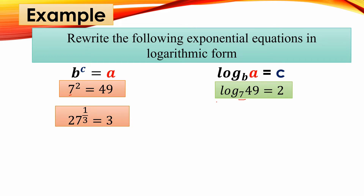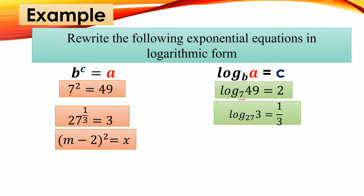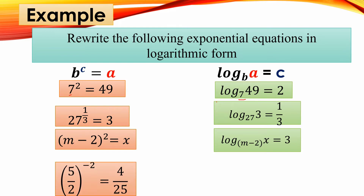Another example: (m minus 2) raised to 2 equals x. Transformed, this becomes: log base (m minus 2) of x equals 2. Wait — actually the exponent becomes 3, so log base (m minus 2) of x equals 3. And lastly, (5/2) raised to negative 2 equals 4/25. When we transform this into logarithmic form, it becomes: log base (5/2) of (4/25) equals negative 2.